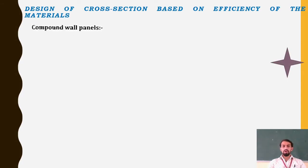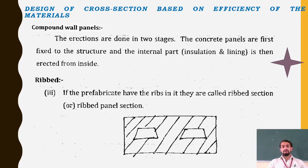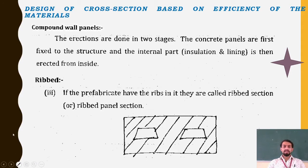The erection of compound wall panels is done in two stages. The concrete panels are first fixed to the structure, and the internal part — the insulation and lining — is then erected from inside. For ribbed sections, if the prefabricated element has ribs it is called a ribbed section or ribbed panel section, with the rib visible at the central part.